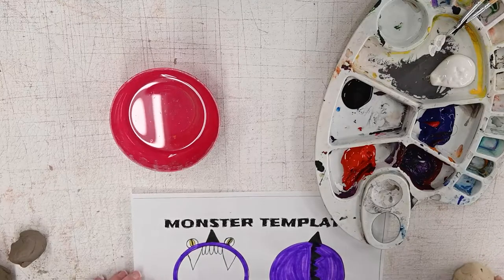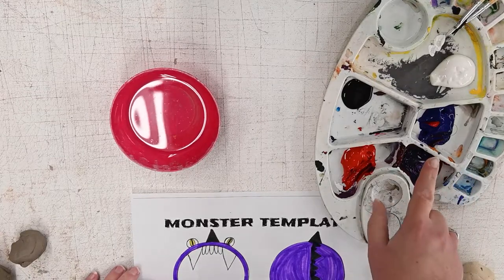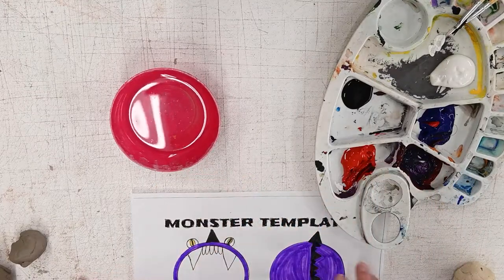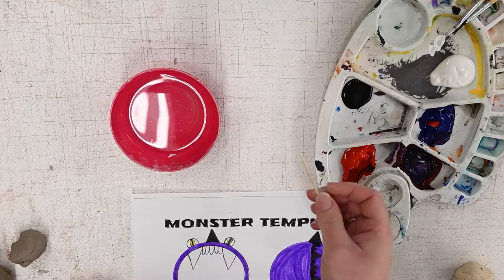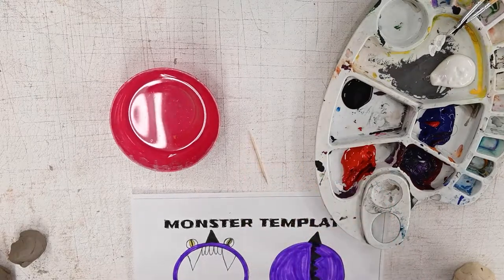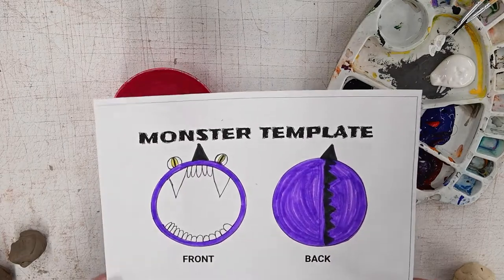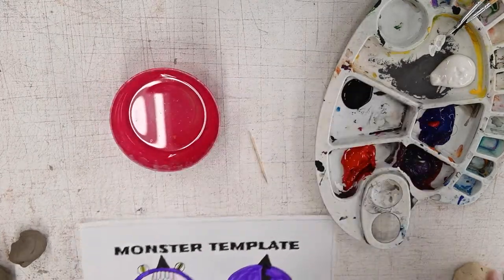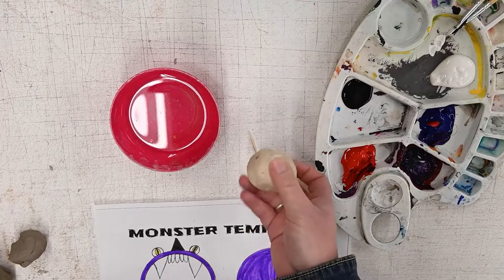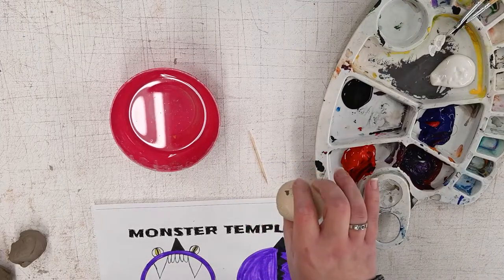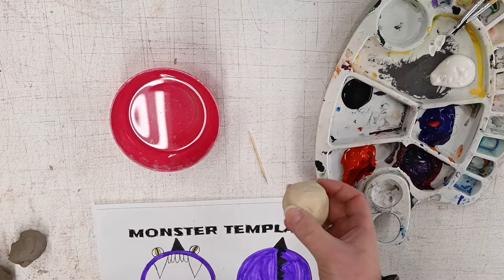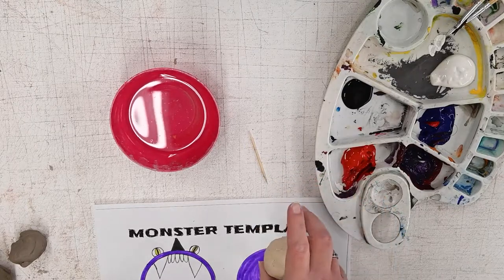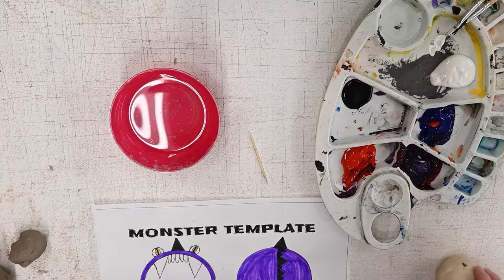So for this project, we're going to need acrylic paint, some water, a toothpick, a monster mouth template or a scrap piece of paper, and some clay. You can use air dry clay like I'm using, or you can make your very own salt dough clay using the recipe and the video found on the VAC resource page.